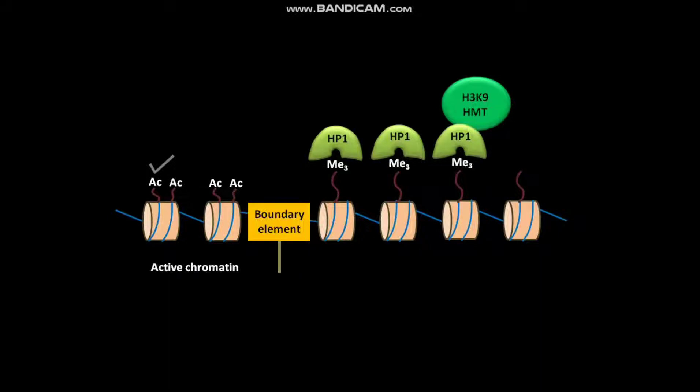The H3 K9 HMT then causes methylation of lysine-9 of N-terminal tail of histone H3. To this trimethylated lysine-9, another HP1 binds.